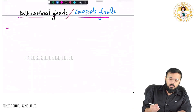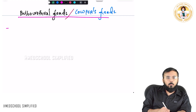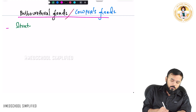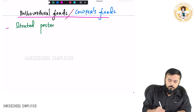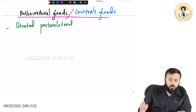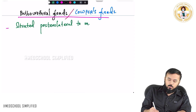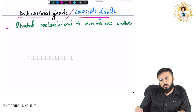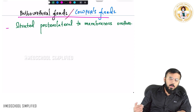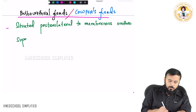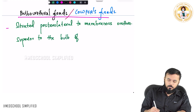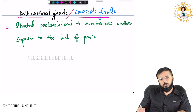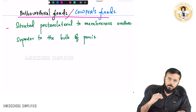These are two small glands situated posterolateral to the membranous urethra, and they are also located superior to the bulb of the penis. You can see the swollen part on the backside — above that only, they are located.